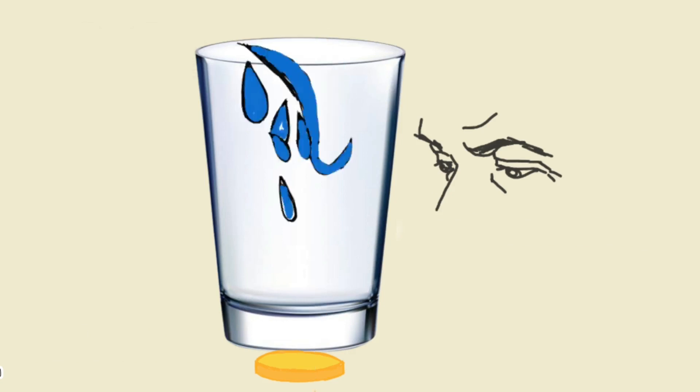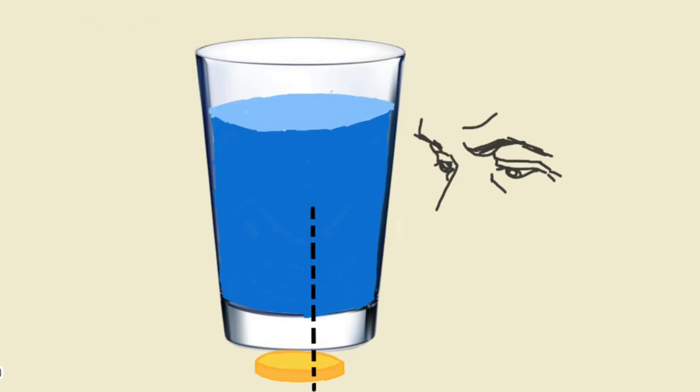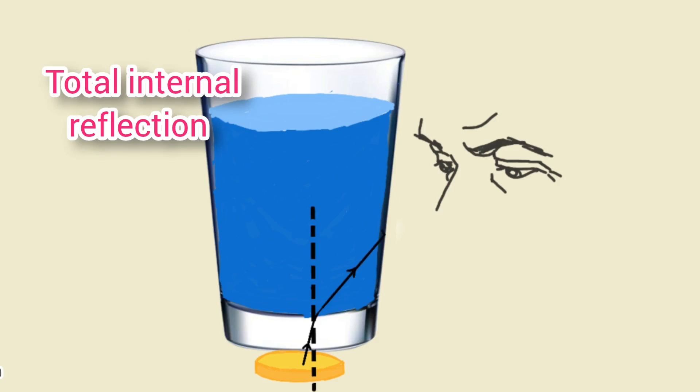Now fill the glass tumbler with water and observe the coin from the sides of it. In this case we cannot see the coin.